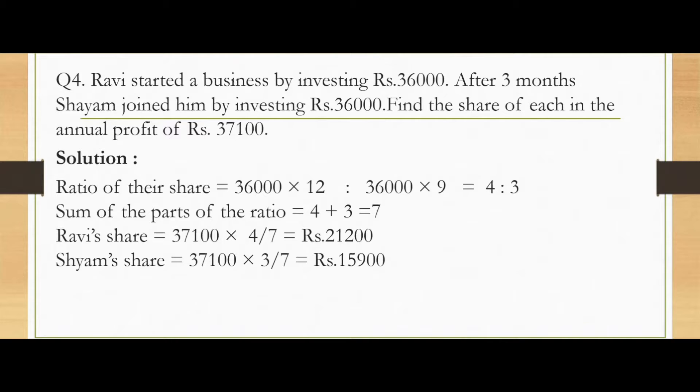Here the profit sharing ratio is not given, so first we need to find that. Now ratio of their share is Ravi invested 36,000 into 12 months where Shyam invested 36,000 for 9 months. So the ratio will be 36,000 into 12 is to 36,000 into 9 which comes to 4 is to 3. Sum of the parts of the ratio will be 4 plus 3 equals 7.